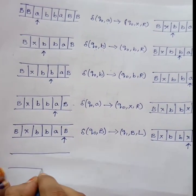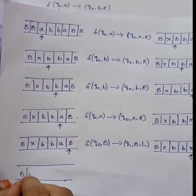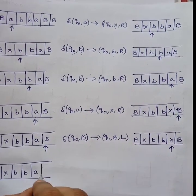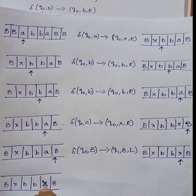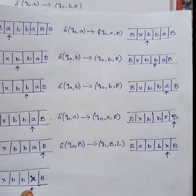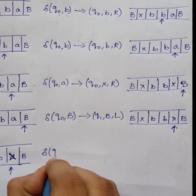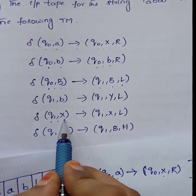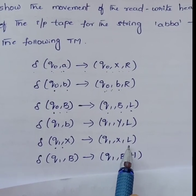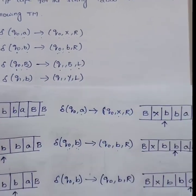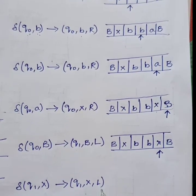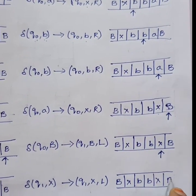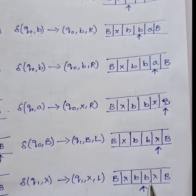Now I am in state Q1. Delta of Q1 comma capital X: it goes to the same state Q1, X remains the same, and the head moves one step left. The tape now reads B, X, B, B, X, B. The read/write head moves one step left and now indicates B. In Q1 state with input B: the machine stays in Q1, B is replaced by Y, and the head moves one step left.